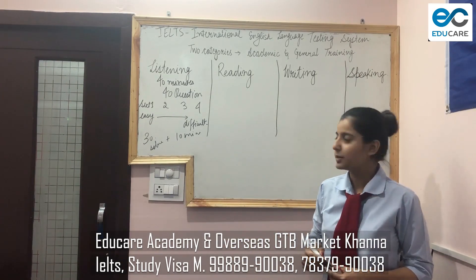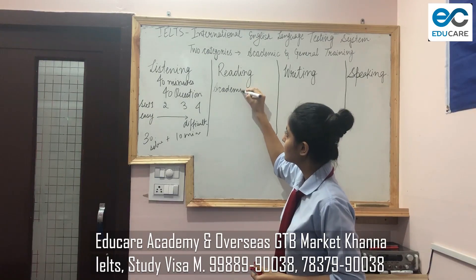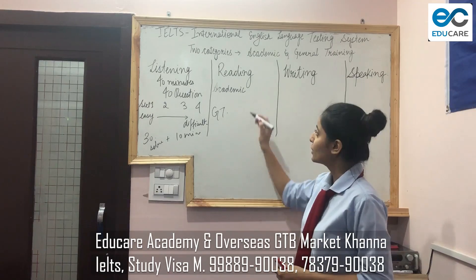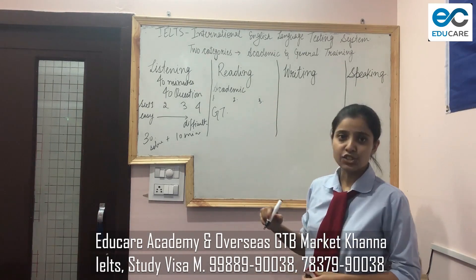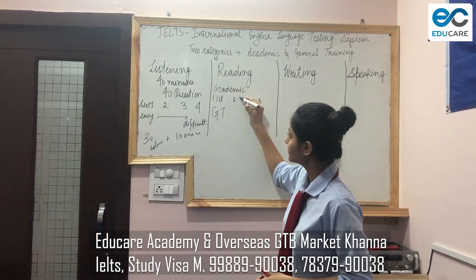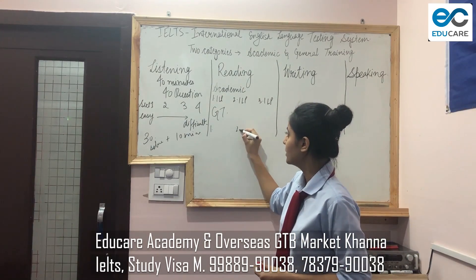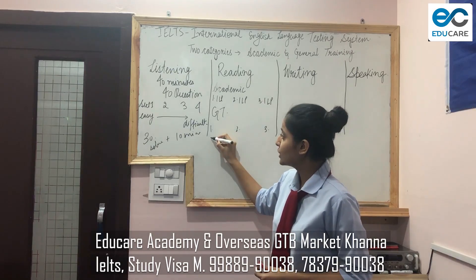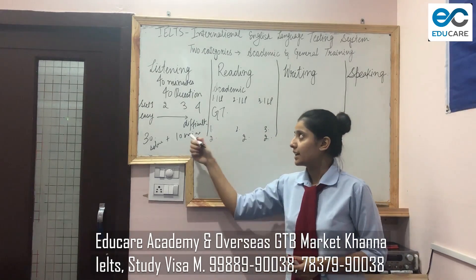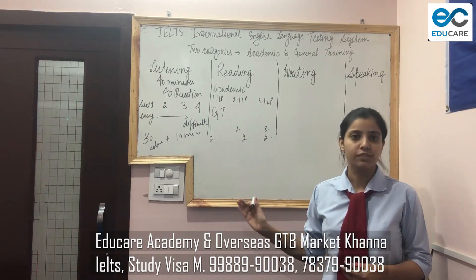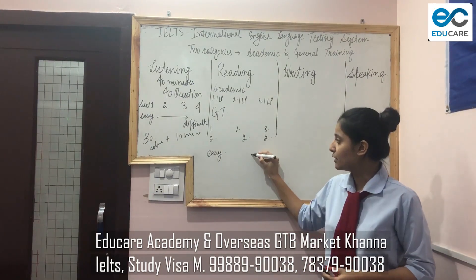Let's move to the Reading module. Reading is different for Academic and General Training students. For Academic students there will be three sections — Section 1, 2, and 3 — each having one long passage. For General Training students there will also be three sections, each having two short paragraphs. As with Listening, Reading moves from easy to difficult, so Passage 1 will be the easiest and Passage 3 will be the most difficult.